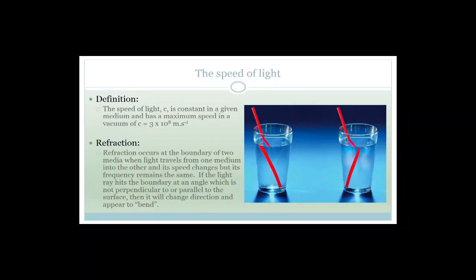The speed of light: c is constant in a given medium and has a maximum speed in a vacuum of 3×10⁸ meters per second. We take the speed of light as a constant of 3×10⁸ m/s. We assume that light travels through Earth's atmosphere so close to the speed of light in a vacuum that we just leave it as 3×10⁸ — it's only when light travels through something very thick and dense that a big difference occurs.